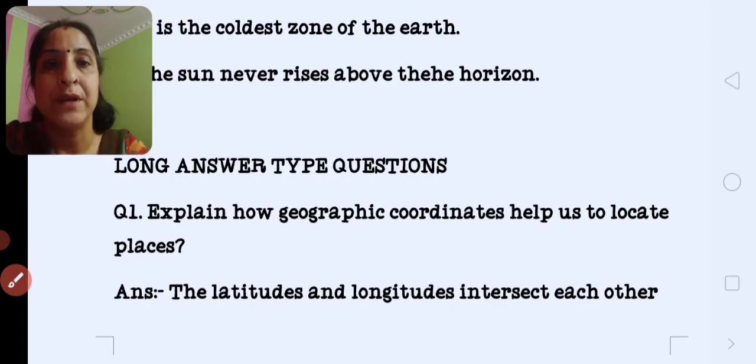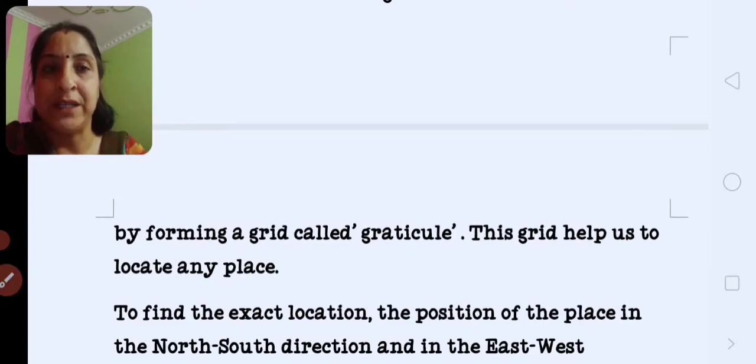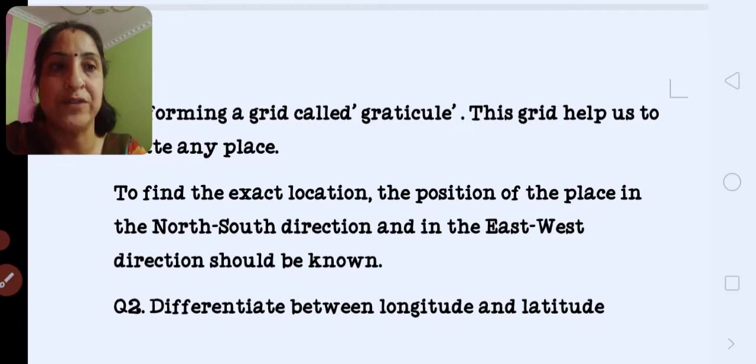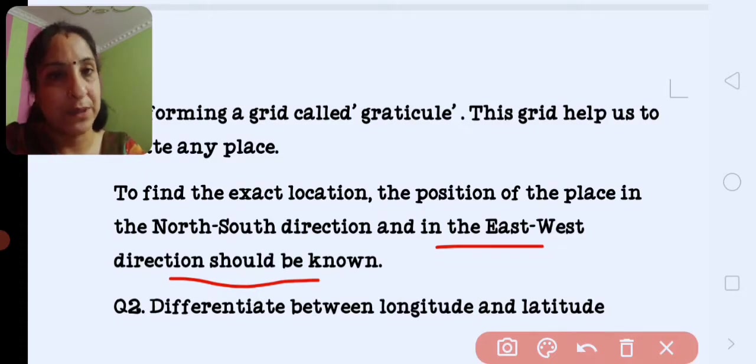Next, long answer type question answer. Explain how geographical coordinates help us to locate the places. The latitude and longitude intersect each other forming a grid called graticule. This grid helps us to locate the places. To find the exact location, the position of the place in the north and south direction and in the east and west direction should be known.